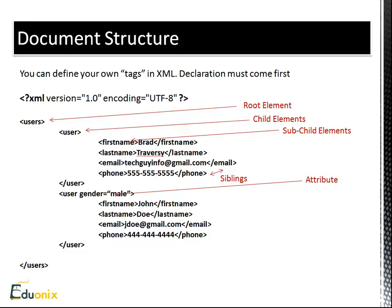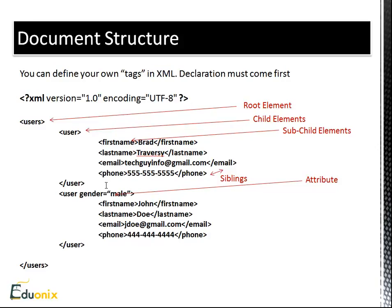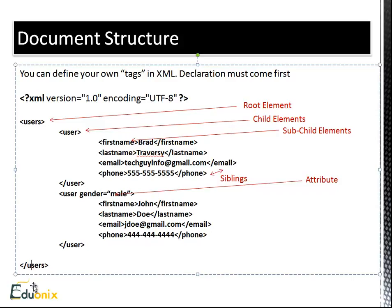This is a basic structure of an XML document. I'm showing you what each element is. Like I said, you can define your own tags. This here is the declaration — it's not needed to function but you should always have it. It tells the browser the version and also the character set of your XML document. Every XML file needs to have a root element, and you can only have one instance of it. Here our root element is 'users' — you can see it starts here and ends down here. All tags need to have a closing tag. Inside the root element we have child elements, such as 'user' — an opening tag and then a closing tag.